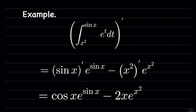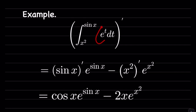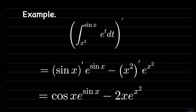Then minus: you repeat the same process with the lower bound. So it's minus the derivative of the lower bound, multiplied by this function, but t replaced by the lower bound. If you substitute t by the lower bound, which is x squared, you get e to the x squared. Now simplify: derivative of sine is cosine, multiplied by e to the sine x, and minus the derivative of x squared is 2x, multiplied by e to the x squared.